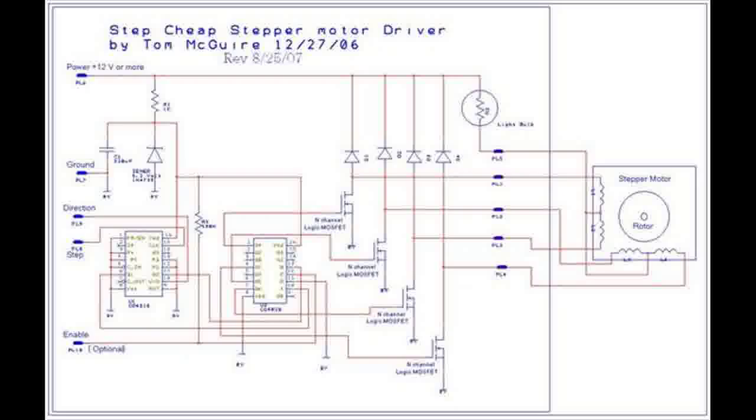The first IC, CD4516, is called an up-down counter. One signal from the printer port will tell the counter if it will count up or down, and the other signal, called step, will increment or decrement the counter by one count.